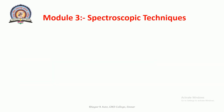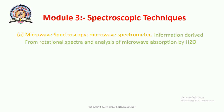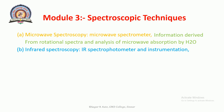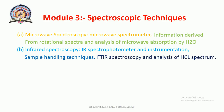The last topic in module two is Electronic Angular Momentum in Diatomic Molecules. Now the third module is Spectroscopic Techniques. First is Microwave Spectroscopy: the Microwave Spectrometer, analysis of H₂O, Information Derived from Rotational Spectra, and Analysis of Microwave Absorption by H₂O. Second is Infrared Spectroscopy: the IR Spectrometer and Instrumentation, and Sample Handling Techniques.